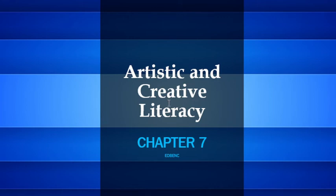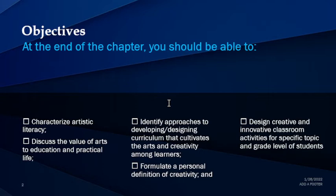Good day everyone. We are now on the seventh chapter of this course: Building and Enhancing New Literacies Across the Curriculum. This chapter covers Artistic and Creative Literacy. The objectives for today's lesson: you should be able to characterize artistic literacy, discuss the value of arts to education and practical life, identify approaches to developing and designing curriculum that cultivates the arts and creativity among learners, and formulate a personal definition of creativity and design creative and innovative classroom activities.